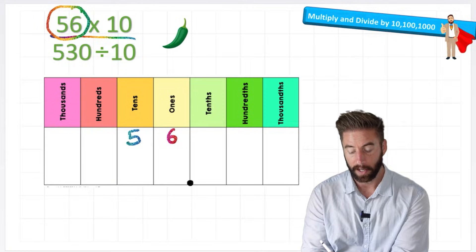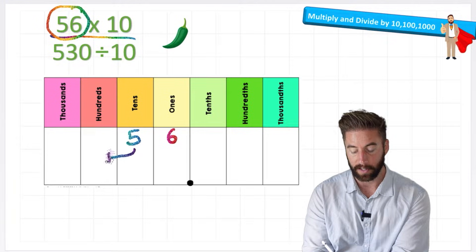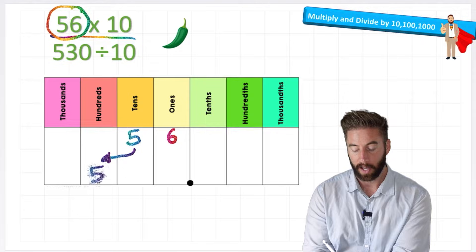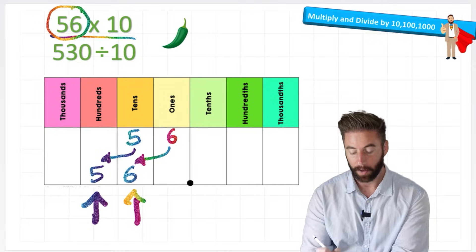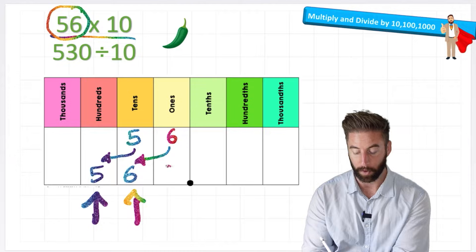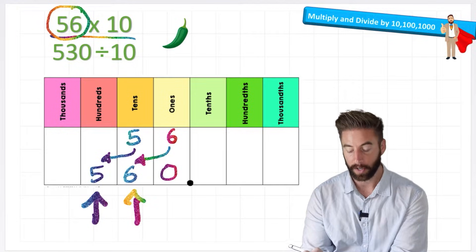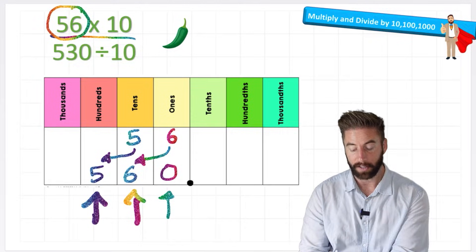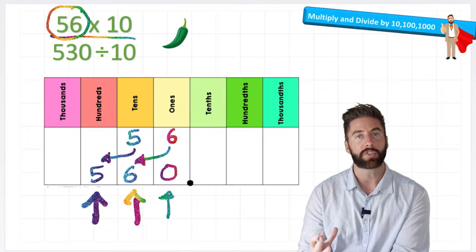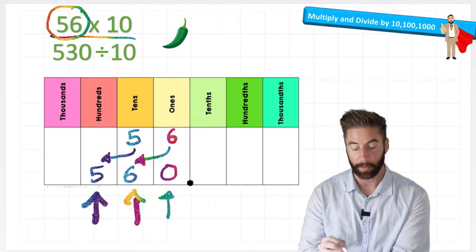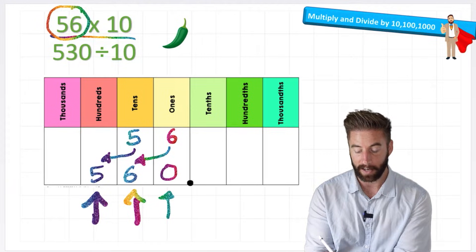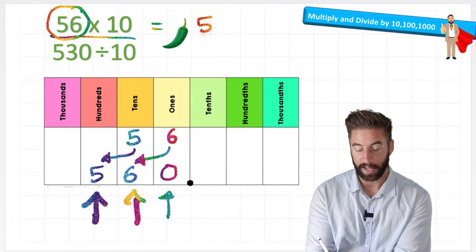Let me show you what I mean. If I move this 5 into this column and I move the 6 into the 10s column, then I end up with 5 hundreds, 6 tens, and although there's nothing in my 1s right now I would have to fill it with what we call a placeholder, or a 0. And now my answer says 560, and 560 is 10 times larger than 56. That's quite easy to see. So my answer to 56 times 10 is 560.